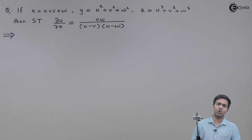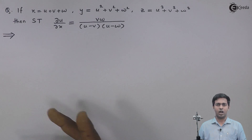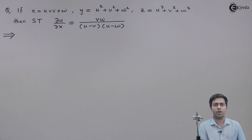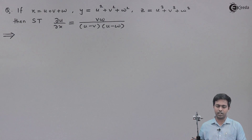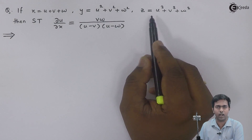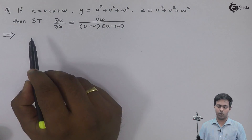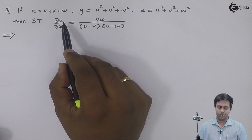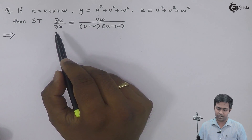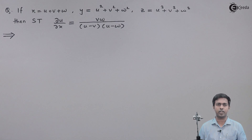Hi friends, in this video we are going to see a problem based on partial derivatives using Jacobians. Here the value of x, y and z is given in terms of u, v and w, and the question is to show that ∂u/∂x is equal to vw upon (u minus v)(u minus w).